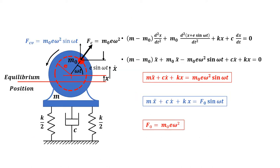Now, let us take a rotating unbalanced system. A rotor is rotating anticlockwise with angular speed omega, and it has an unbalanced mass M0 at eccentricity E, also rotating along with the rotor at omega. Let M be the total mass of the system, which includes M0. This rotating system is supported by introducing a stiffness element with net stiffness K and a damping element with net damping coefficient C.